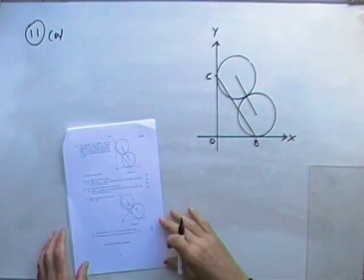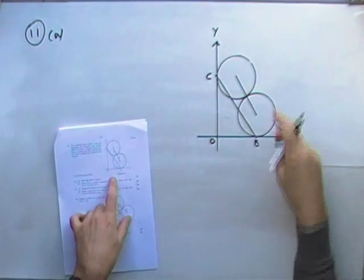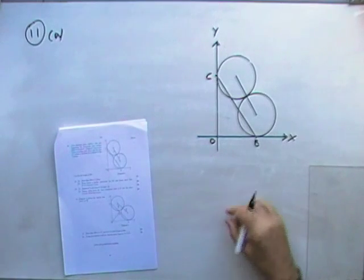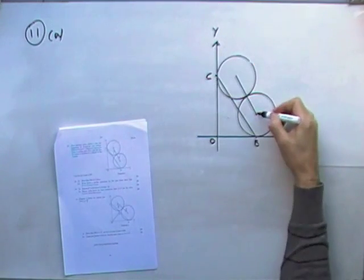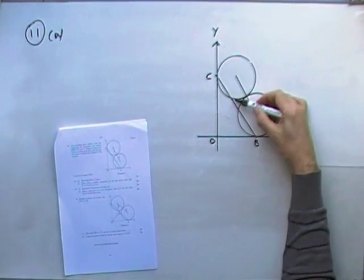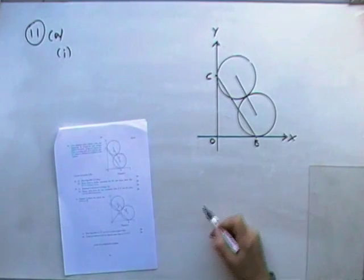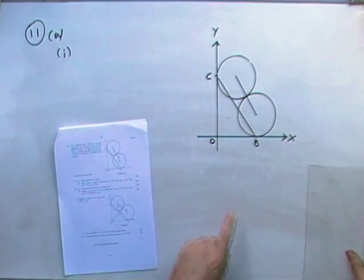Number 11, the last question, quite a long question. Two touching circles resting against the axis. The line joining the centres is inclined at an angle of P radians. What's the first part? Show that OB is equal to 1 plus 2 sin P.